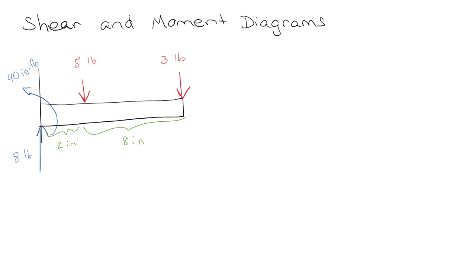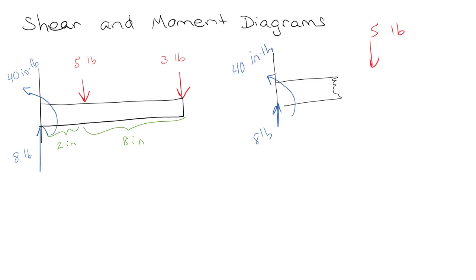Basically what we're going to do is start by creating a little section somewhere before the five pounds. The five pounds is out here somewhere. We still have our eight pound force and our 40 inch-pound moment. We're some unknown distance x away from wherever we happen to be, so we're going to have some kind of shear which is going to be a function of x.